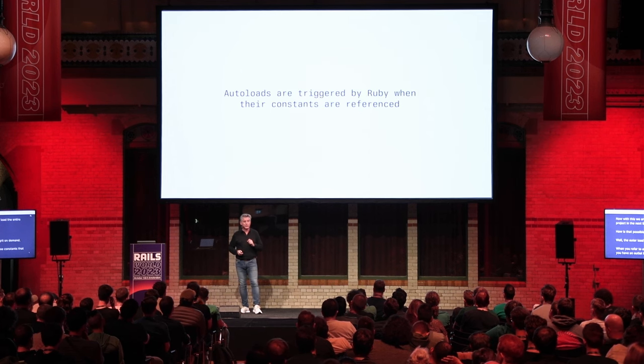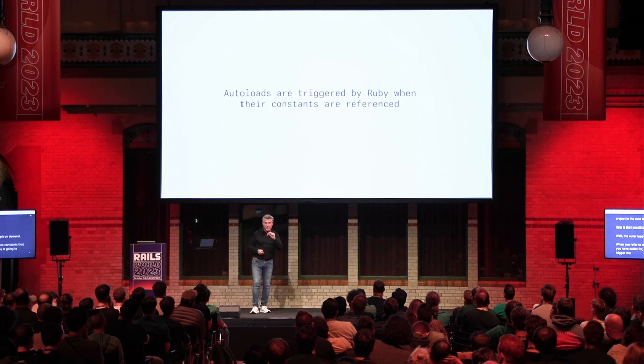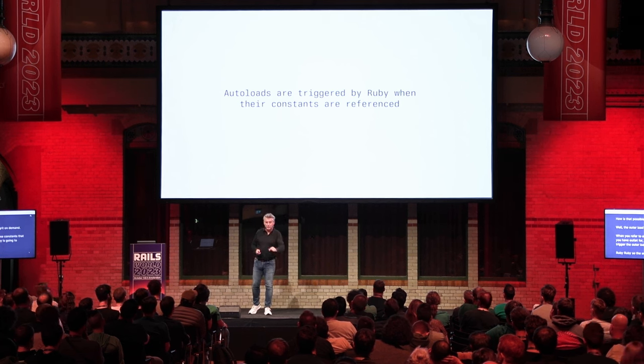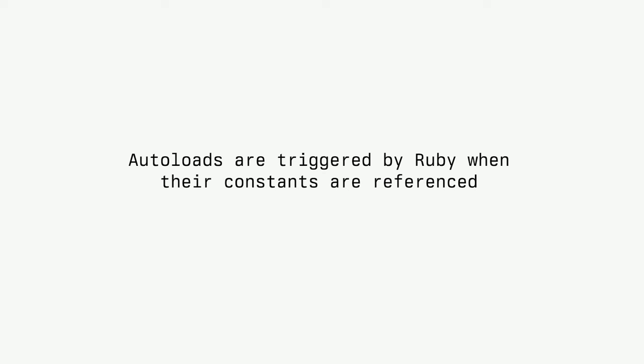With just those autoloads, you're able to use the entire project. The autoloads are triggered on demand when you refer to one of those constants — Ruby triggers the autoload. The actual autoloading is performed by Ruby, which is intentional: it's built into the interpreter, it respects the lookup algorithms, and it's a key feature we are leveraging.